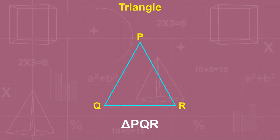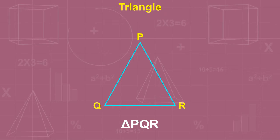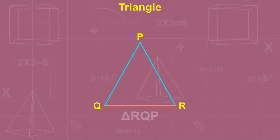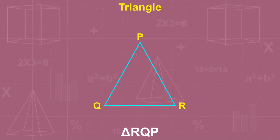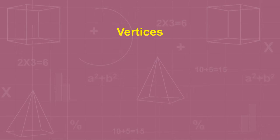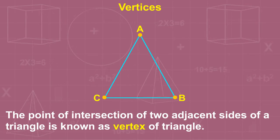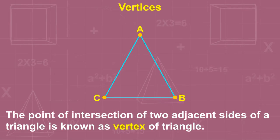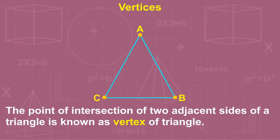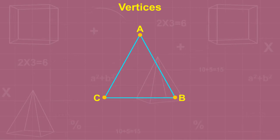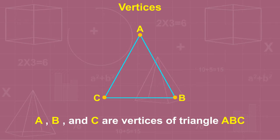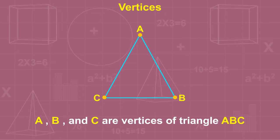Triangle PQR can also be termed in different ways such as △QRP, △RPQ, △RQP, or △PRQ. The point of intersection of two adjacent sides of a triangle is known as a vertex of the triangle. In any triangle ABC, A, B, and C are the vertices of triangle ABC.